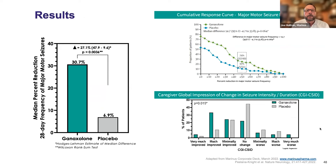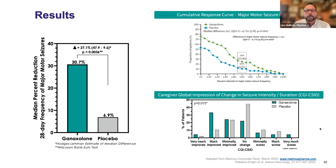For efficacy: a 30.7% median percent reduction in the ganaxolone group versus 6.9% in placebo, resulting in a median difference of 27% between the two groups. The cumulative response curve on the top right shows the drug was superior to placebo at each point. The 50% responder rate was not statistically significant; however, 60% and 40% thresholds were. On the bottom is an exploratory endpoint — a nominal p-value with no correction for multiplicity — called a global impression of seizure intensity and duration that favored ganaxolone, something we're interested in looking at further.